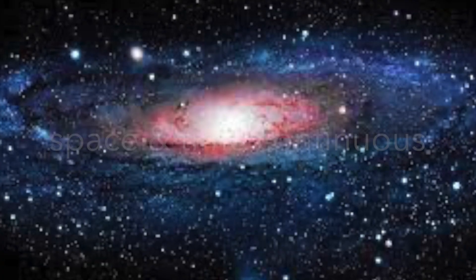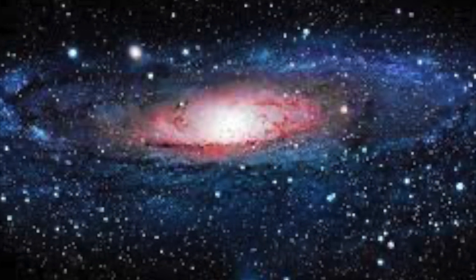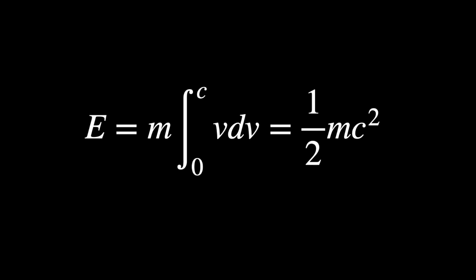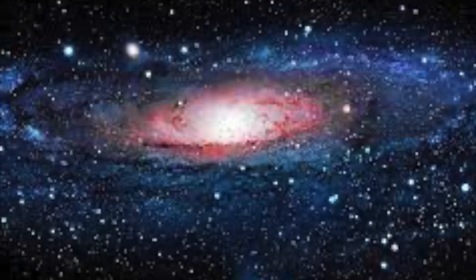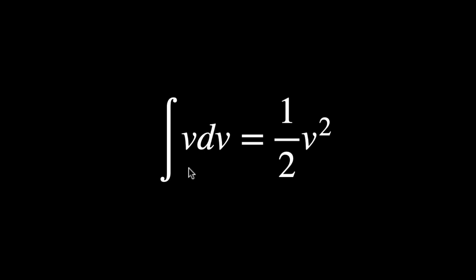If space and time are both continuous, then it is inevitable that integrating the above from v equal to 0 to v equal to c will result in the following. E is equal to half mc squared. This is because the integral of v dv is half v squared.